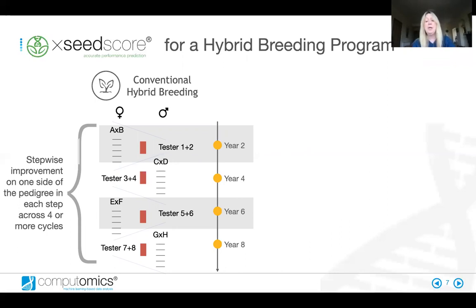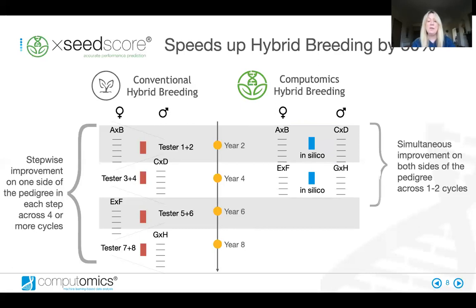Machine learning can create a model based on a set of all hybrids and testers, and simulate and predict the phenotype of all possible combinations between them. This way you can evaluate the combining ability, identify optimal testers, and simultaneously improve both sides of the pedigree at once. We can also identify low performing lines early on, which means that low performers are not planted in the field and you're saving field plots only for the high performers.